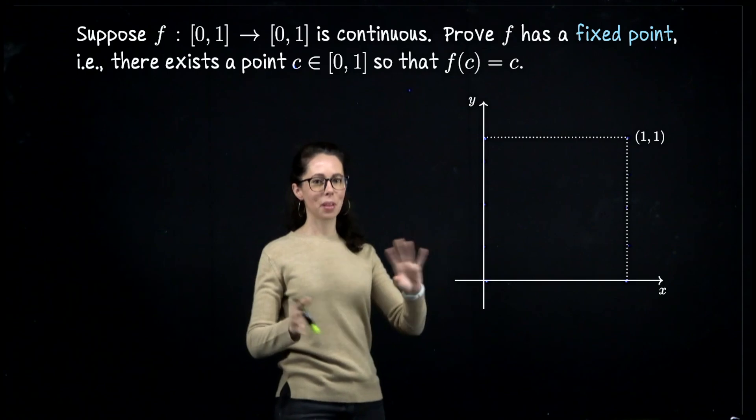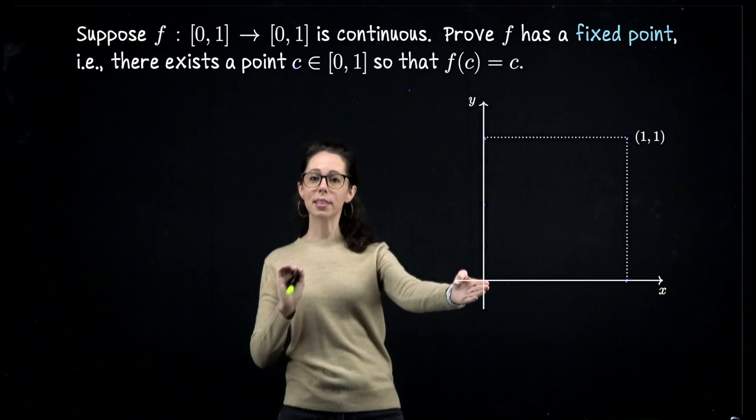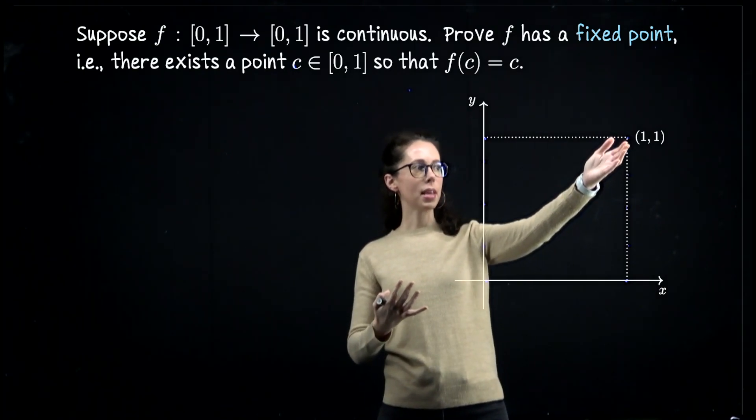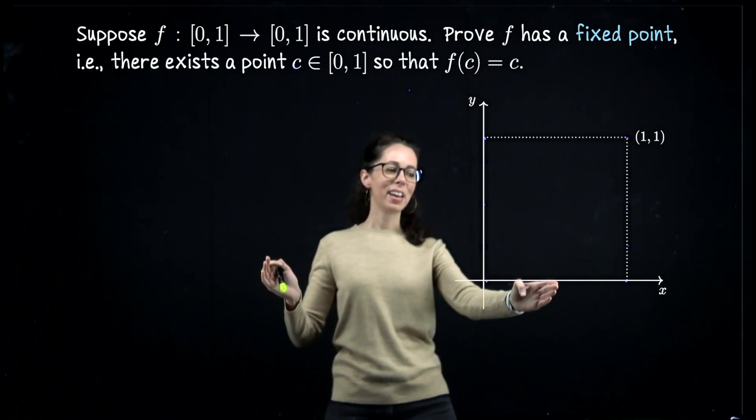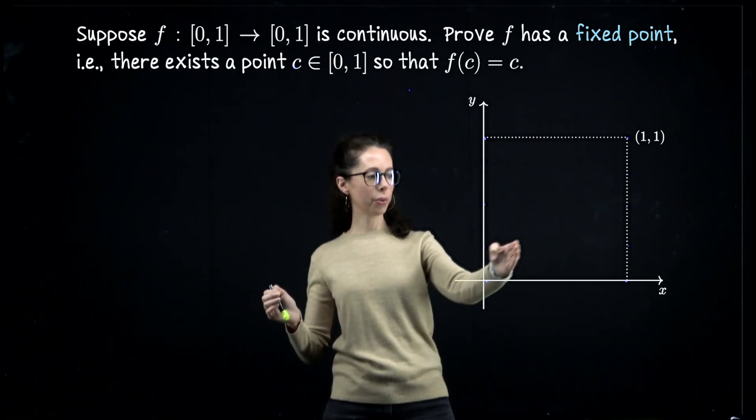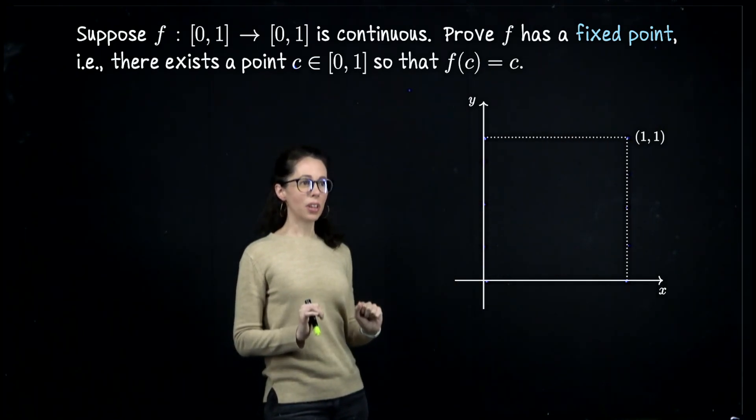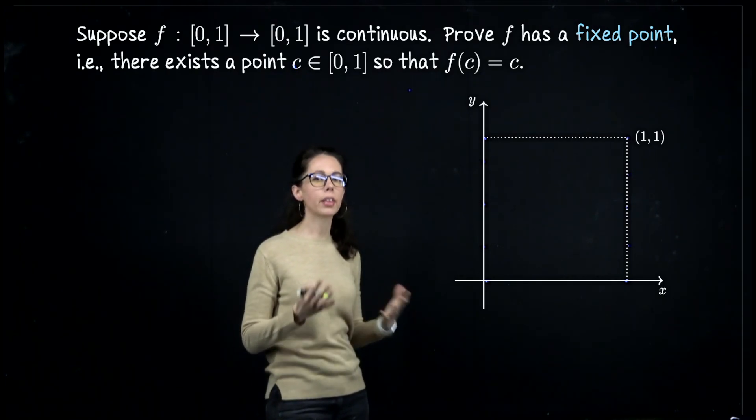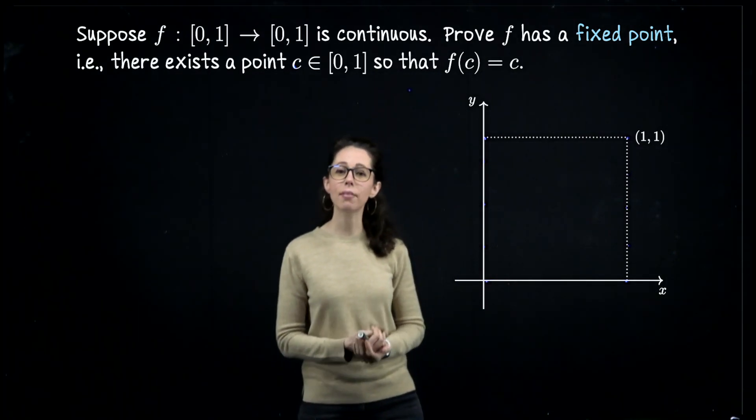In other words, let me just give you a couple scenarios. Perhaps f(0) = 0, in which case 0 is a fixed point. Or in the other extreme, perhaps f(1) = 1, in which case 1 is a fixed point. Or maybe f(1/2) = 1/2, or f(0.2) = 0.2, or f(0.9) = 0.9. If f sends an input back to itself, we call that a fixed point. Our goal is to prove that any such continuous function from [0,1] to [0,1] must have a fixed point.